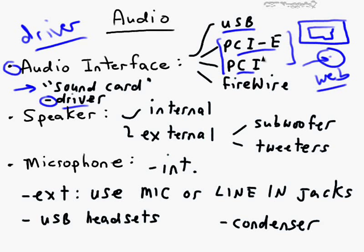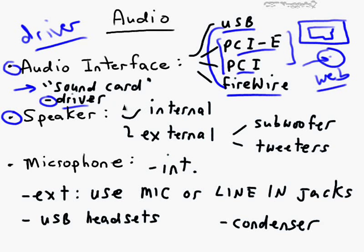PCI-E and PCI slots are multi-purpose — you can put different types of peripheral cards in them, like video, network, audio, and so on. For external use you also have the FireWire or 802-1394 type connector. Besides having the circuitry to process audio output and potentially audio input if you're using a microphone, we need to have a speaker in place to be able to observe that audio.